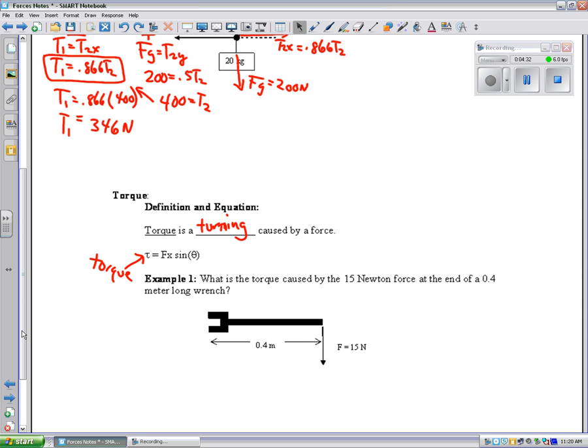Now, to do this problem, we're going to use our equation torque equals Fx sine theta. The force we're given is 15 newtons. The distance from the pivot point is 0.4 meters. And the angle is going to be 90 degrees. Don't necessarily draw this, but my x is here, my force is here, so that's a right angle. So, it's going to be sine of 90.